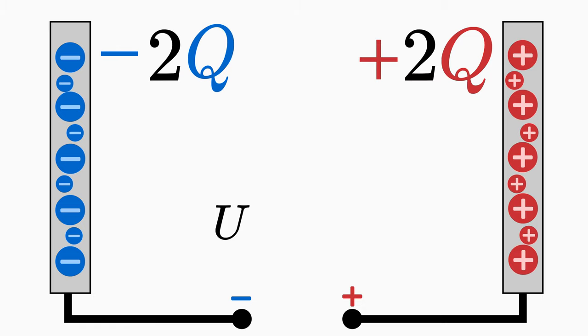If you double the electric charge Q, then the electric voltage U doubles as well. A test charge would then gain twice as much energy when it moves from one plate to another.